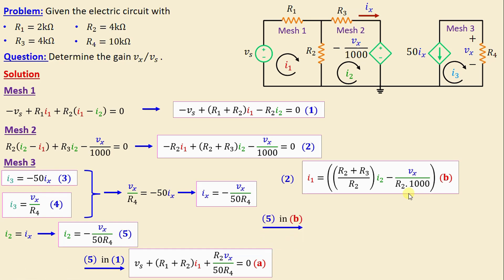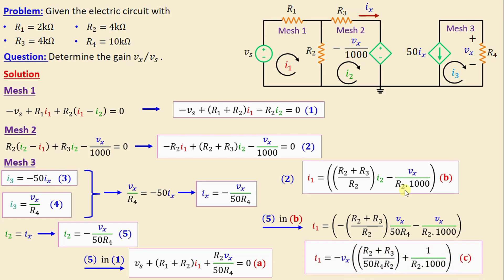By substituting now 5 in B, we derive one equation in terms of Vx, or we derive the expression of I1 in terms of Vx. By combining now the two terms multiplied by Vx, we obtain I1 which is given by expression C.